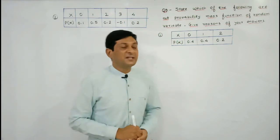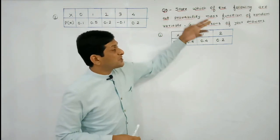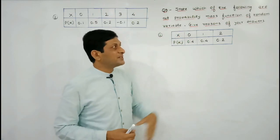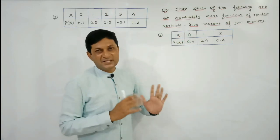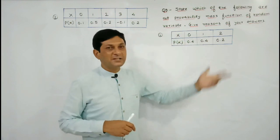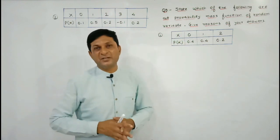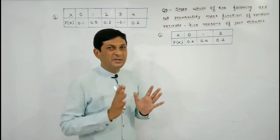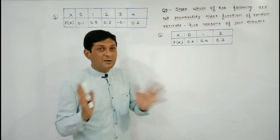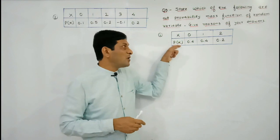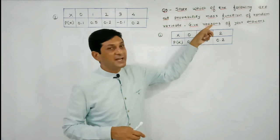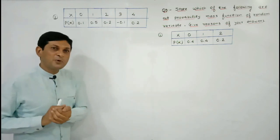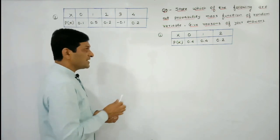In question number 3, we have to state which of the following are probability mass functions of a random variable and give reasons. Values of the random variable and their corresponding probabilities are given. We need to identify whether P(x) is a probability mass function or not.